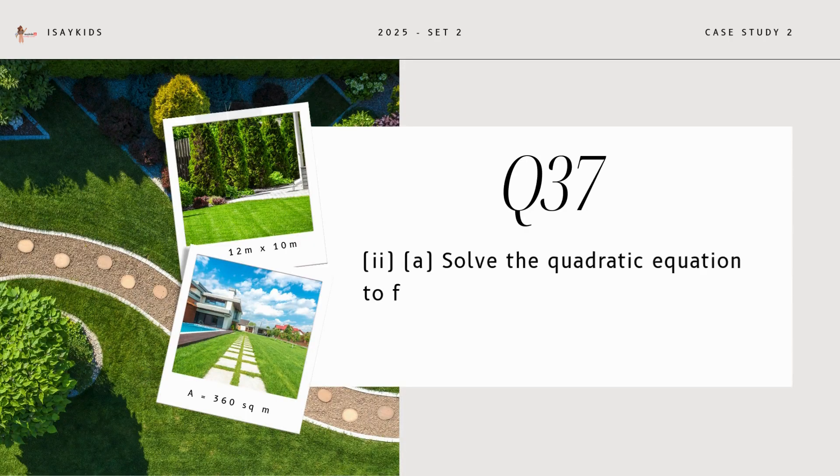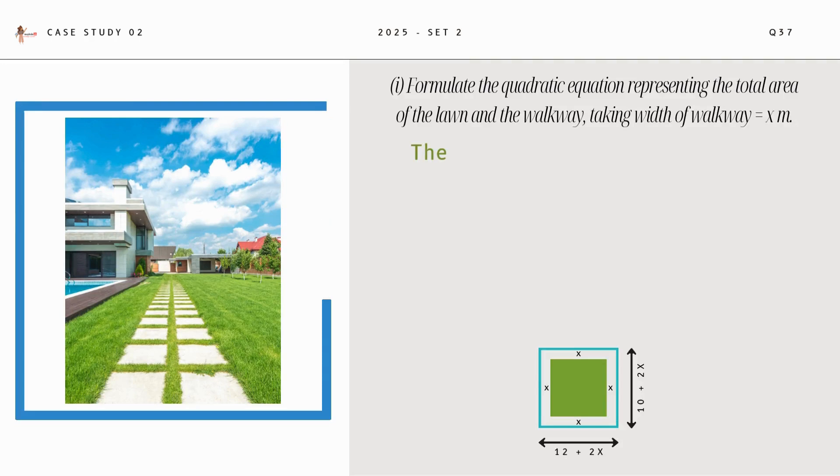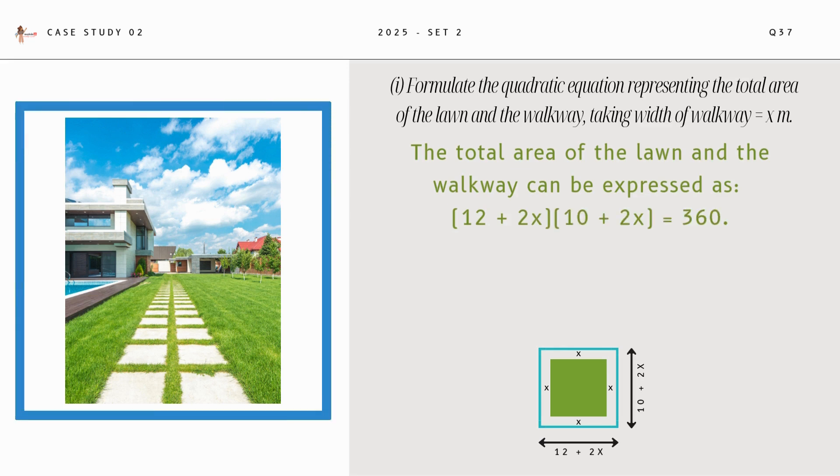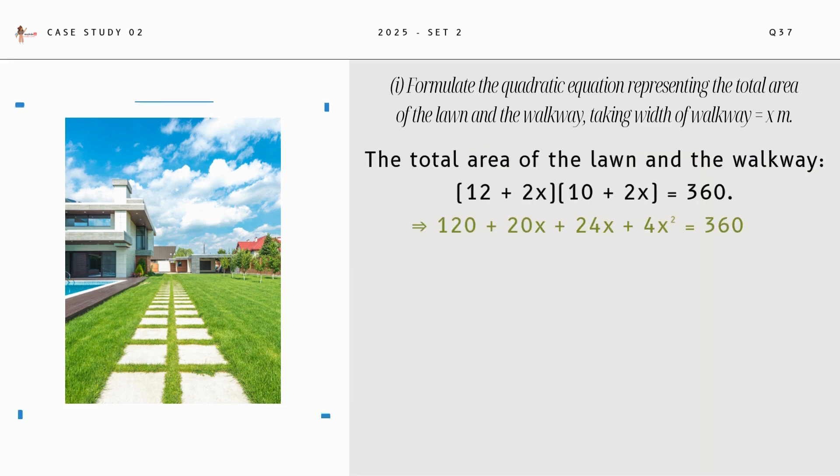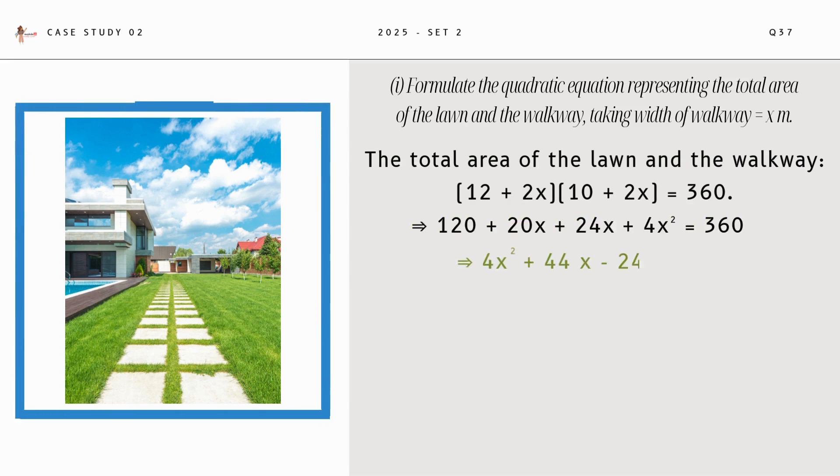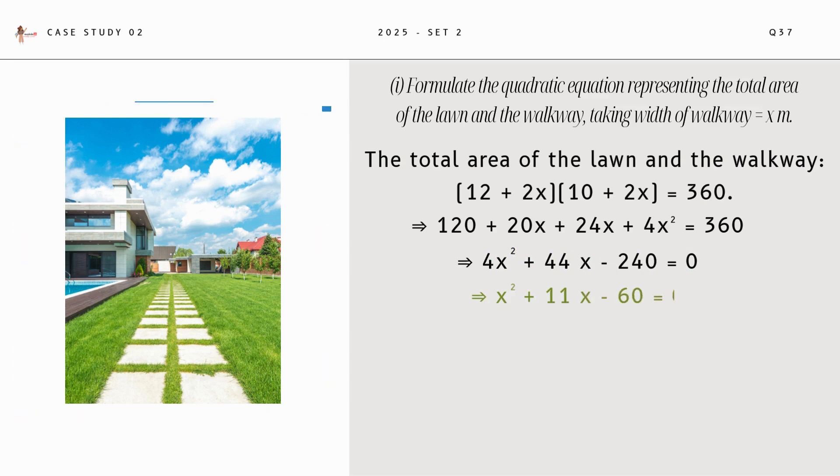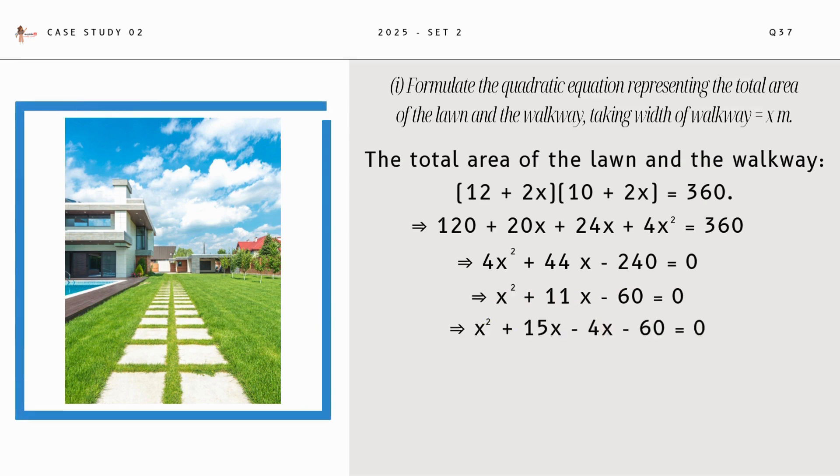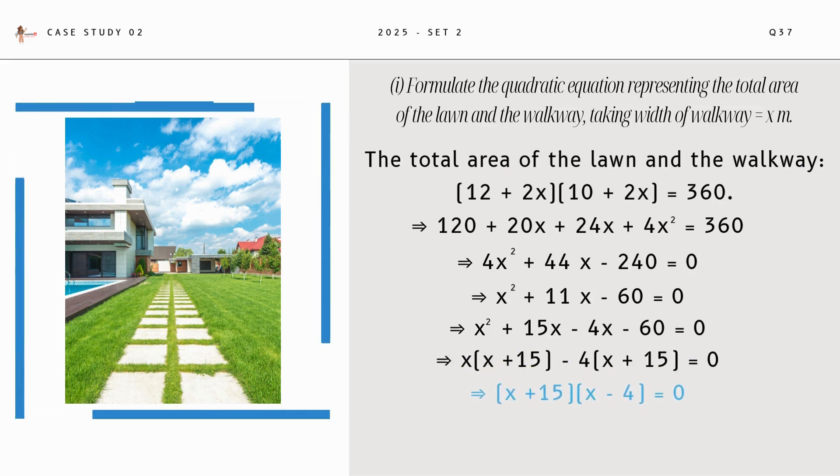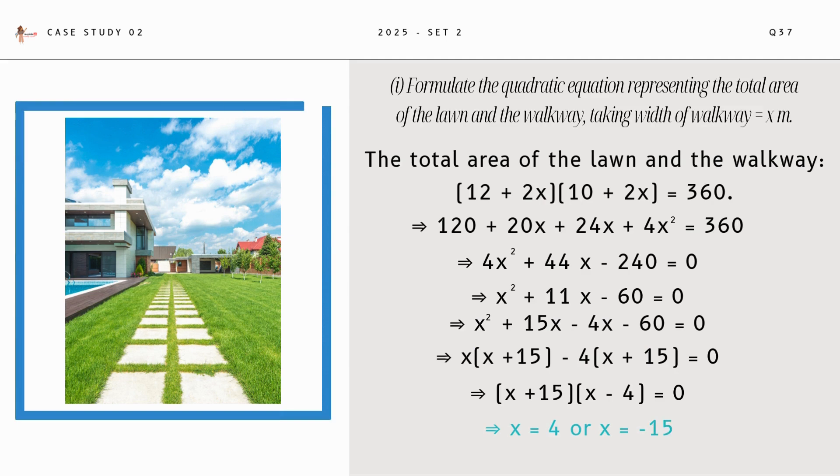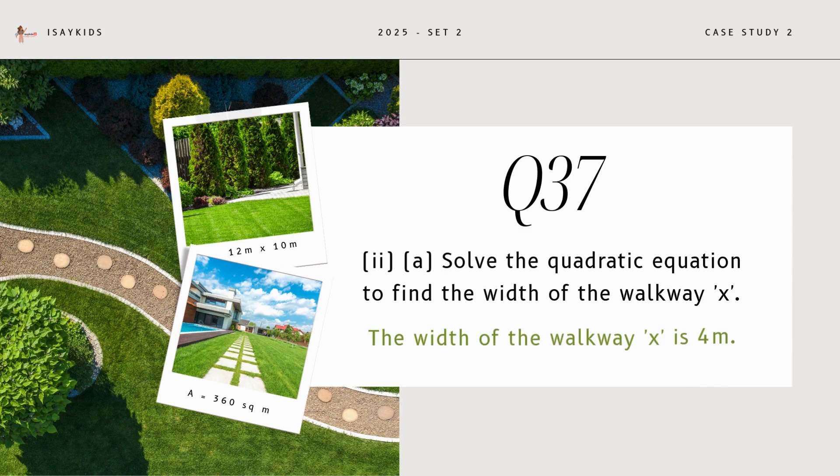Now, solve the quadratic equation to find the width of the walkway x. Let's expand the equation for total area. We get, solving this and then dividing the equation by 4, we get, let's split the middle term. We will get x as 4 because we can discard the negative value. Thus, the width of the walkway x is 4 meters.